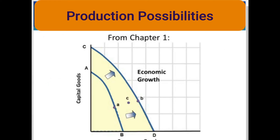Economic growth is made possible by the four supply factors that shift the production possibilities curve outward, as from AB to CD. Economic growth is realized when the demand factor and the efficiency factor move the economy from points such as A and C that are inside CD to the optimal output point, which is assumed to be point B in this figure. Point C represents situations in which real output falls below what it should have been if the economy was operating at full employment, as occurred during the severe recession of 2007 to 2009.